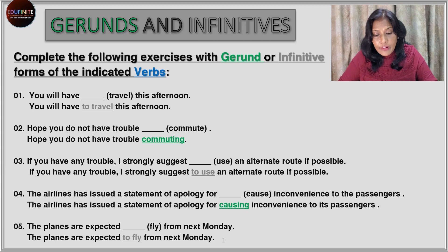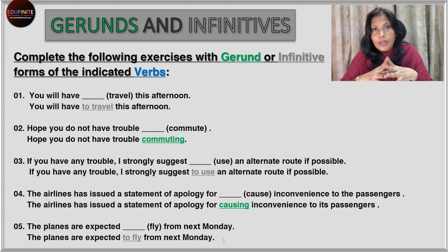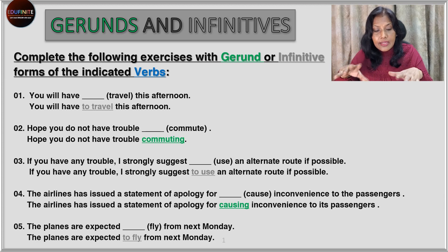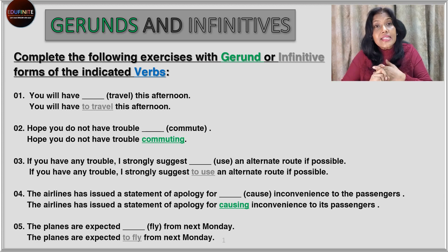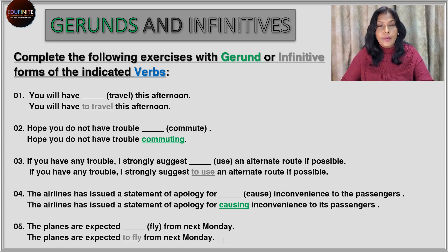Next: the planes are expected to fly from next Monday. Whenever we have the '-ed' form of the verb, we usually use the infinitive after that. We don't say 'the planes are expected flying from next Monday' — we say 'are expected to fly', the infinitive form, from next Monday.